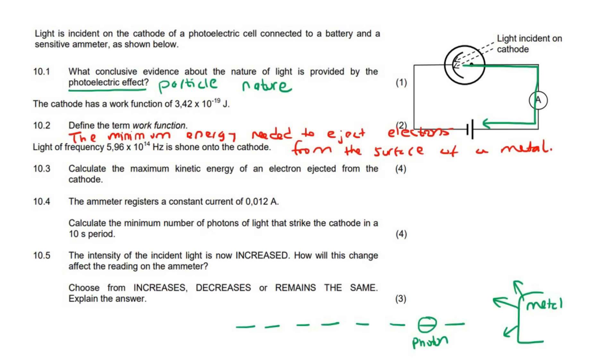Moving on, it says light of frequency 5.96 times 10 to the 14 hertz is shone onto the cathode. Calculate the maximum kinetic energy of an electron ejected from the cathode.